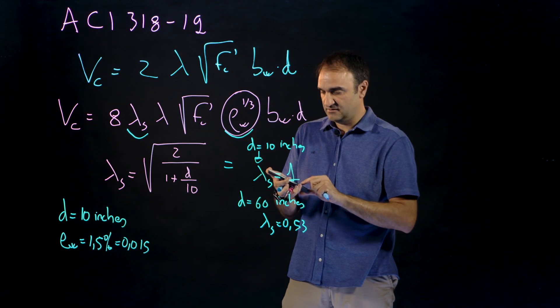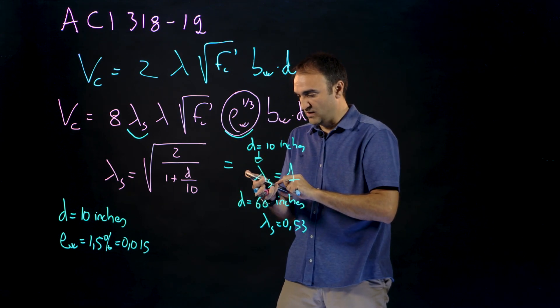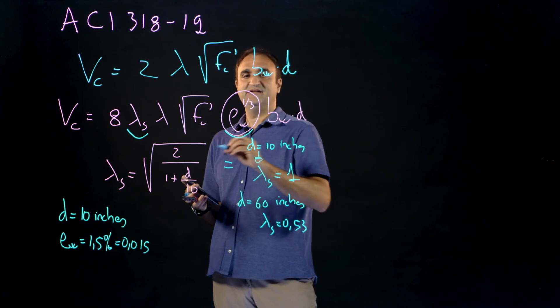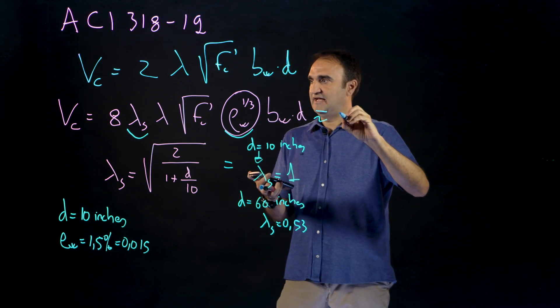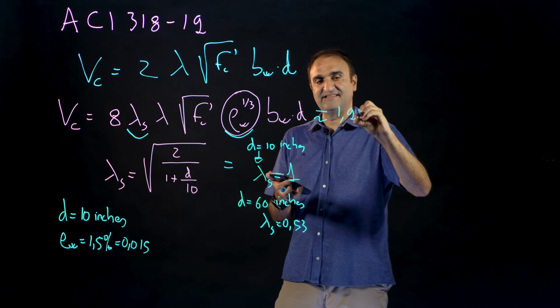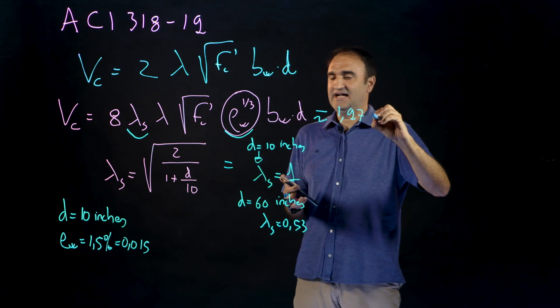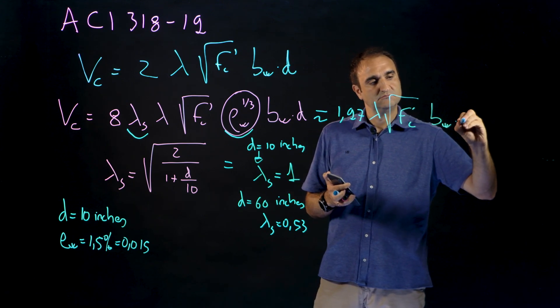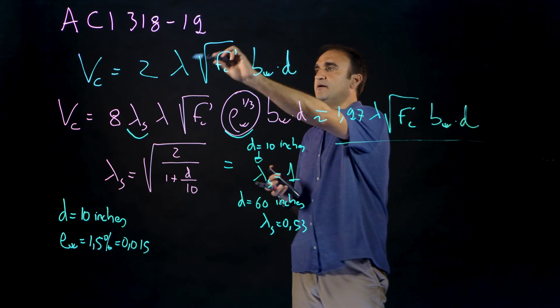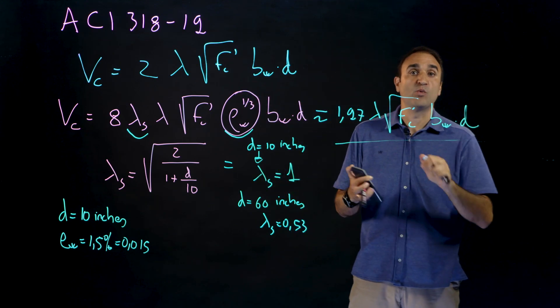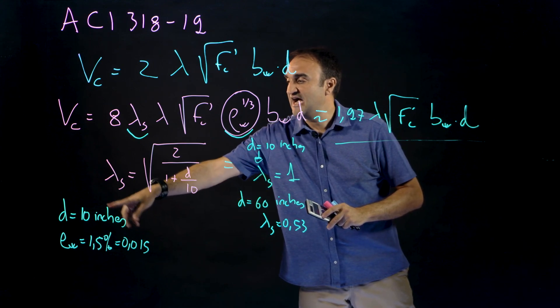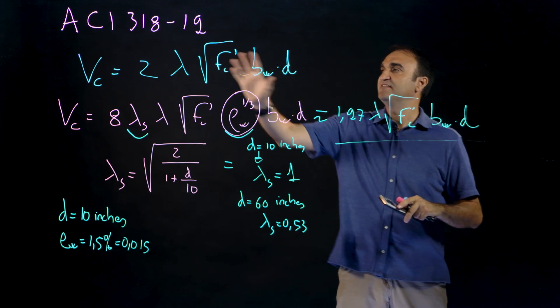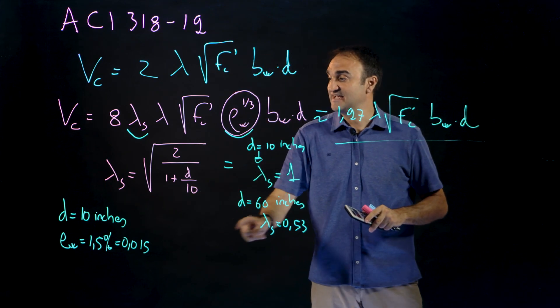Then if we put this here the size effect will be 1 so we have 8 times 0.015 to the one third, this will be, this equation becomes 1.97 so practically 2, the same we had earlier. So for a slab with 1.5 percent of longitudinal reinforcement and with the effective depth of 10 inches and a small slab we have the same equation, but if d increases and rho decreases, which is quite normal, then this equation would be unsafe.